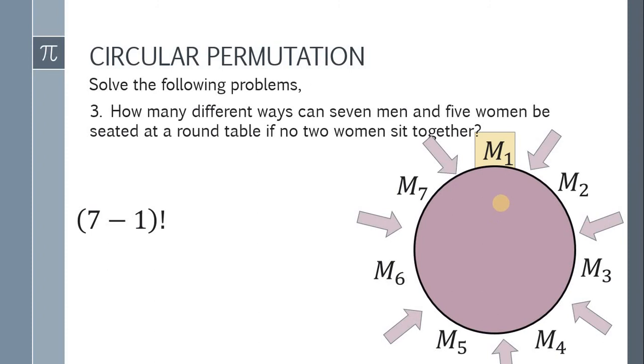Ang tanong, ilang space yun? We have 1, 2, 3, 4, 5, 6, 7. Therefore, merong seven spaces para dun sa five women. Yung first women, meron siyang seven choices na pwedeng upuan. Yung pangalawang women, since naupuan na yung isa, meron na lang siyang six choices. Yung pangatlo, meron na lang siyang five choices. And yung pangapat, meron na lang siyang four choices, and so on, and so forth.